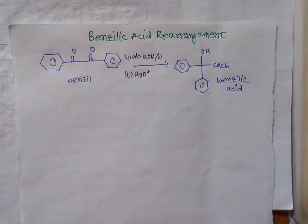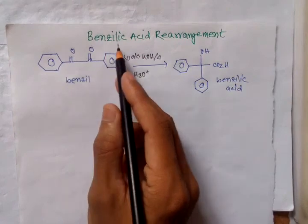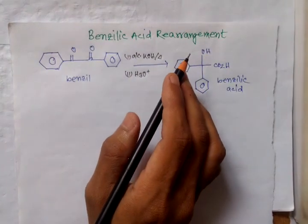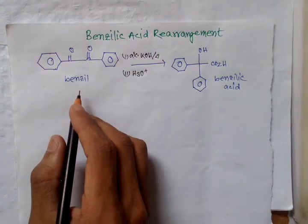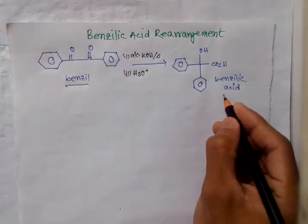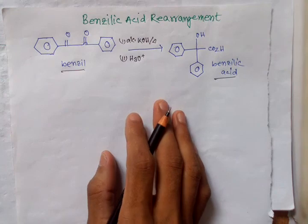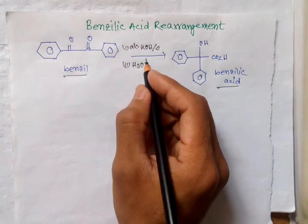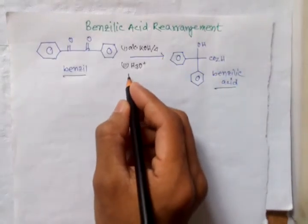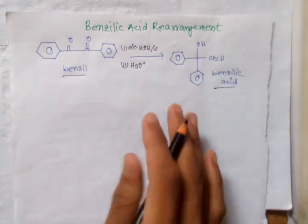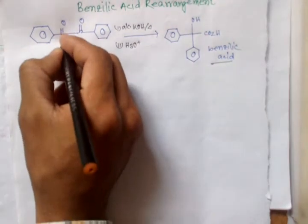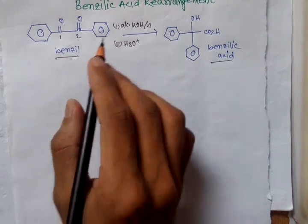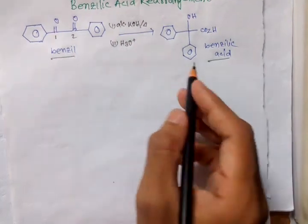Today I am going to discuss the topic benzylic acid rearrangement, also called benzyl benzylic acid rearrangement. It is a reaction of benzil to benzilic acid with treatment of alcoholic KOH or any strong base, followed by hydrolysis. Generally, 1,2-diketone compounds can undergo benzyl benzylic acid rearrangement to give the corresponding product.